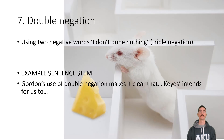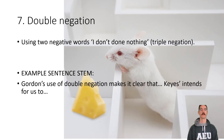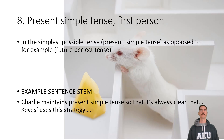Jumping from five to seven — as we do in maths — the next technique is double negation: using two negative words, for example 'I don't done nothing,' which is actually triple negation. Your sentence starter is: 'Gordon's use of double negation makes it clear that... and Keyes intends for us to...'